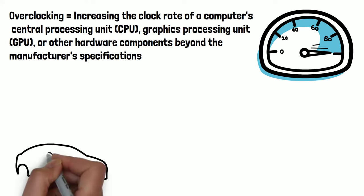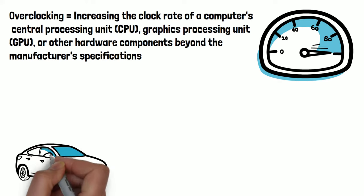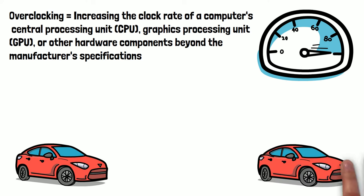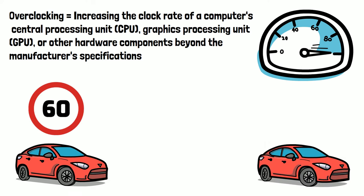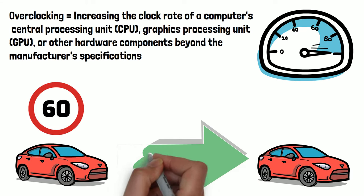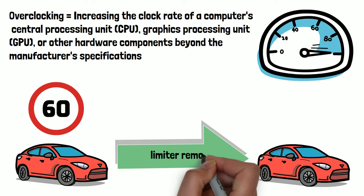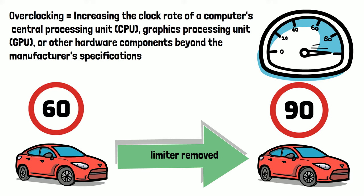Think of it like when a vehicle's max speed is limited by the manufacturer because of regulations or safety concerns. In some cases, the limiter can be removed, allowing the vehicle to reach its maximum possible speed. This is similar to what's happening when you overclock a CPU or GPU.